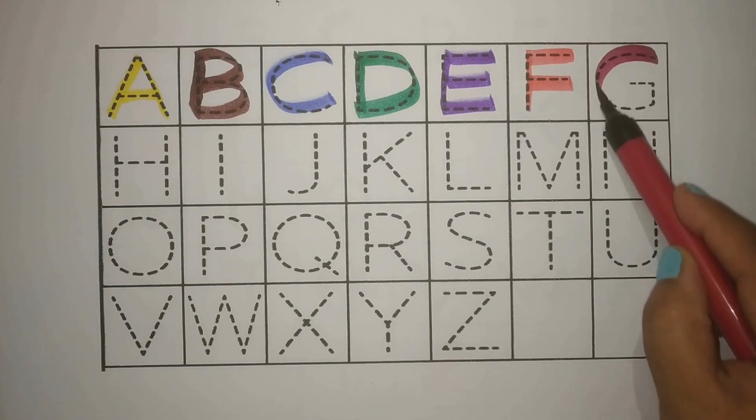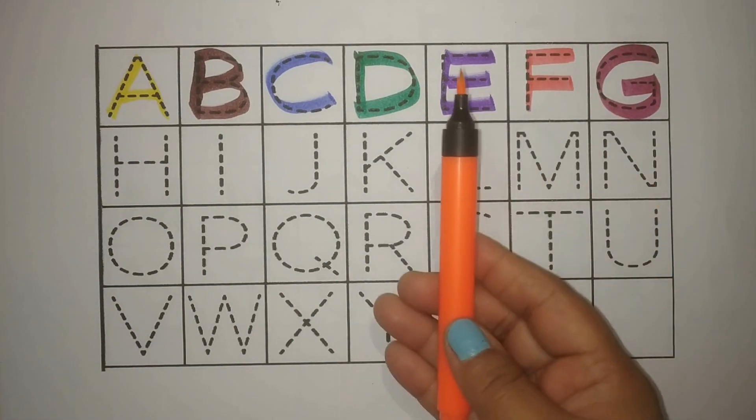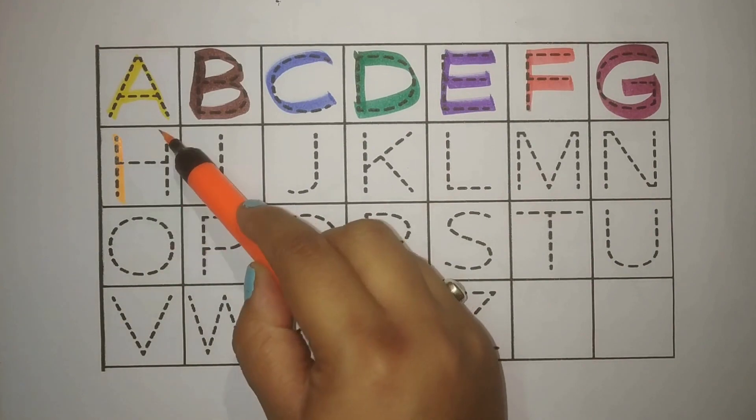Pink, G, G for grass, ghas. Orange, H, H for horse, ghoda.